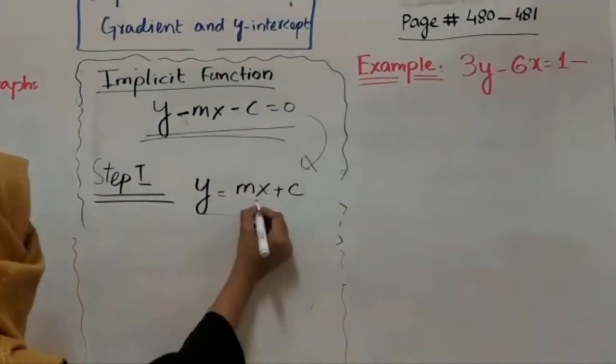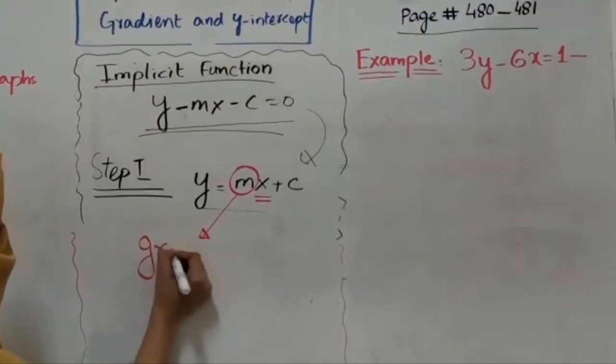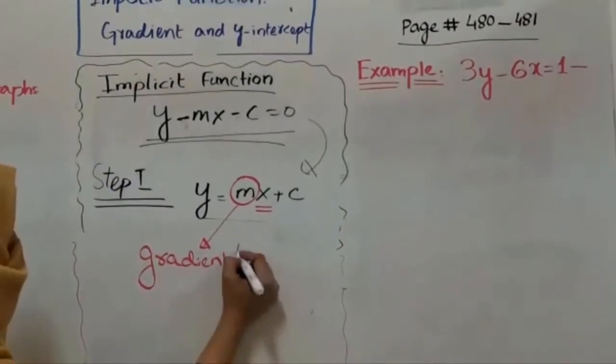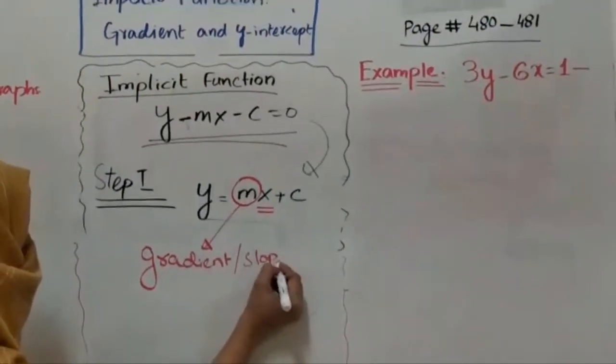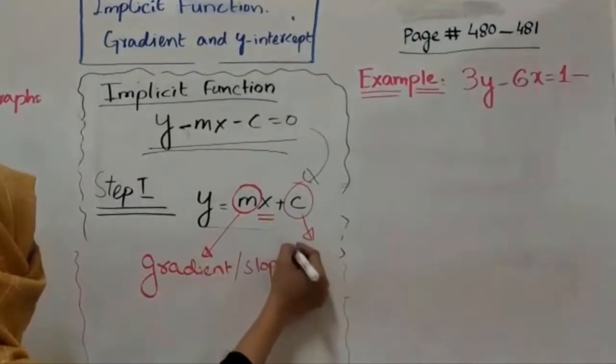Here, the coefficient of x is the gradient or the slope - gradient or the slope - and without any variable you have y-intercept.